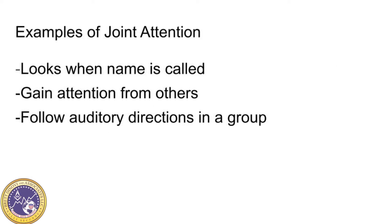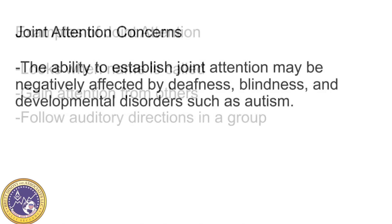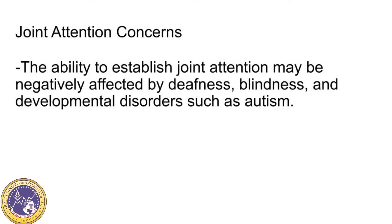Some examples of joint attention are looking when your name is called, gaining attention from others, and following auditory directions in a group. One of the concerns is that the ability to establish joint attention may be negatively affected by deafness, blindness, and developmental disorders such as autism.